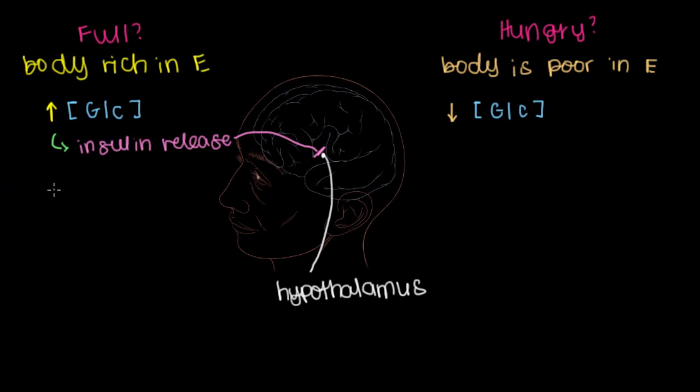Now what if we ate a really fatty meal and we have high levels of lipids or fat in our bloodstream? Something really greasy. Well that'll cause the release of a hormone called leptin. Leptin is similar to insulin in that it represents the presence of energy rich nutrients in the bloodstream. So it'll go to the hypothalamus and bind receptors there to inhibit the feeling of hunger.